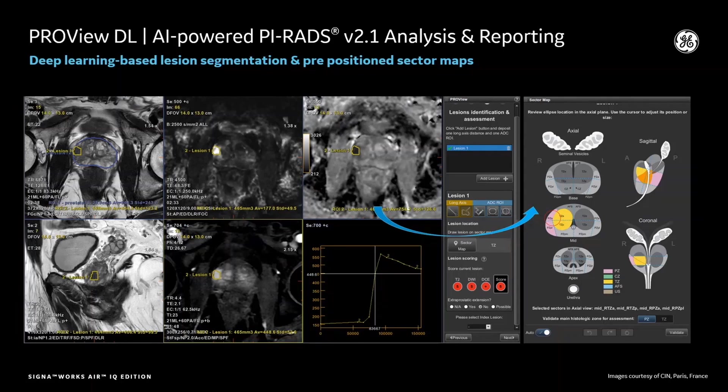Analysis and reporting is equally important to increase the reach and access of prostate MRI — another area where artificial intelligence can have profound impact. GE's ProView solution utilizes deep learning in prostate segmentation, automated PSA density reporting, as well as pre-positioned sector maps to streamline reporting.